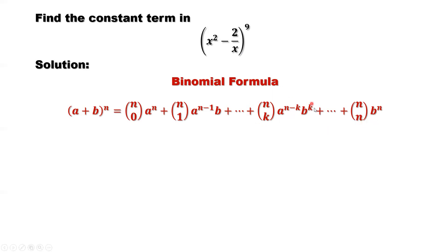The general term is n choose k times a to the power n minus k, times b to the power k.